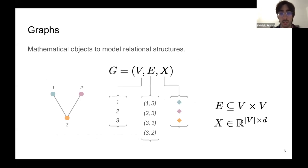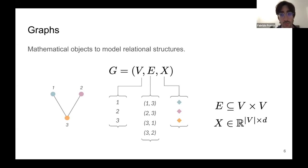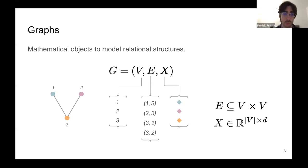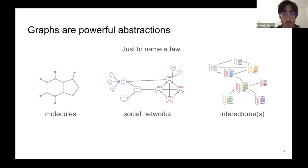We typically define graphs as tuples containing a set of vertices or nodes, a set of edges between these vertices, and in this tutorial we'll also consider node features — features living in some real vector space associated to the nodes. We might also consider edge features, though we won't get deeply into that case, but many of the results we'll present cover it as well.